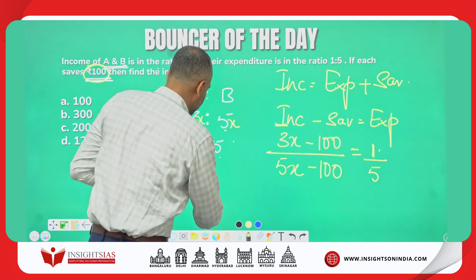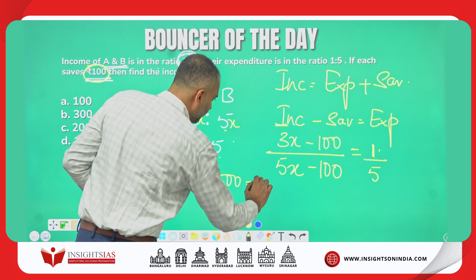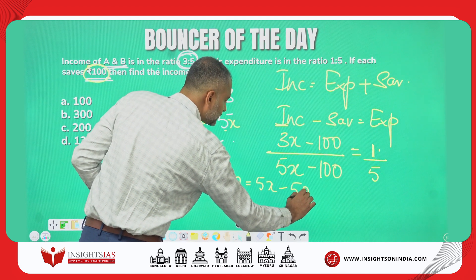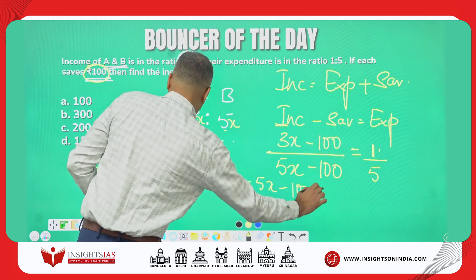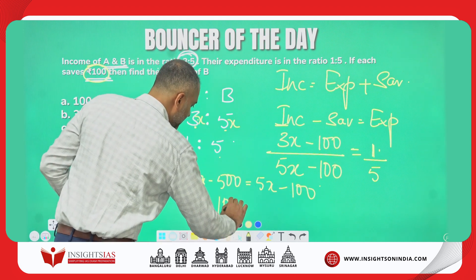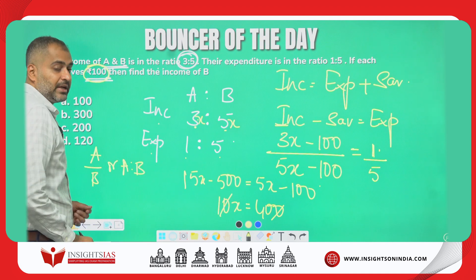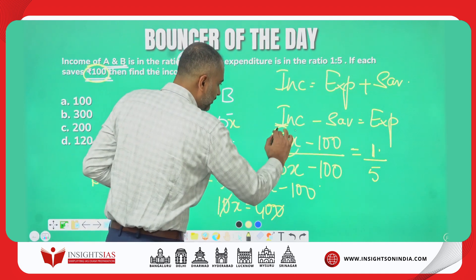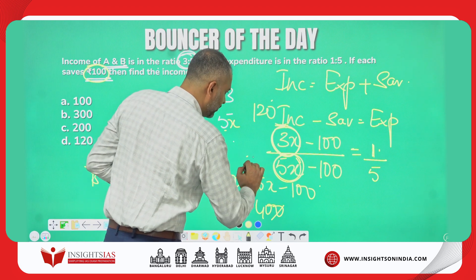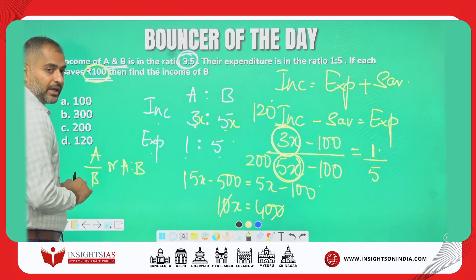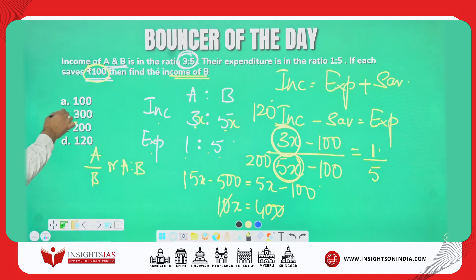Solving: 15x minus 500 equals 5x minus 100, which gives 10x equals 400, so x equals 40. If x equals 40, then 3x equals 120 and 5x equals 200.